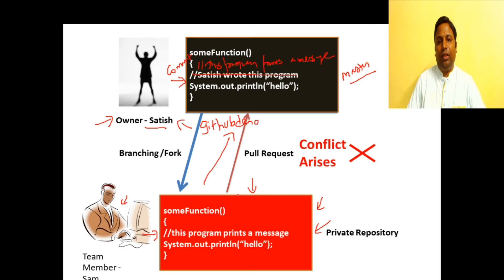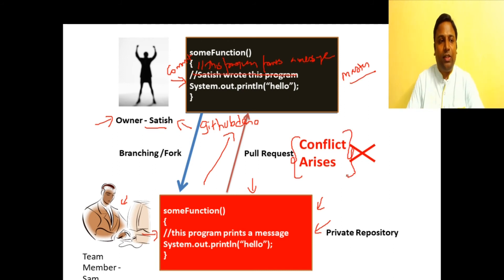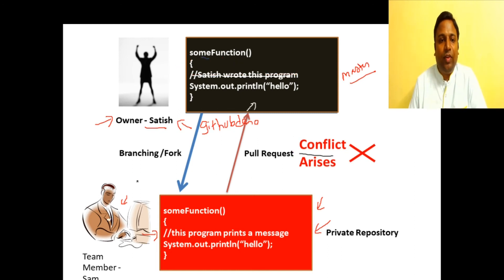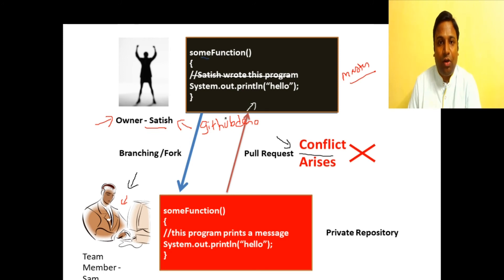When Sam tries to push his changes, GitHub detects that he is deleting another user's changes — this is called a conflict. GitHub will say there's a conflict and you cannot do this because you are overwriting the changes of another user. Sam gets a conflict notification when trying to push to the main repository.